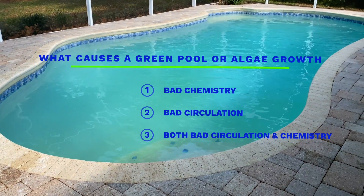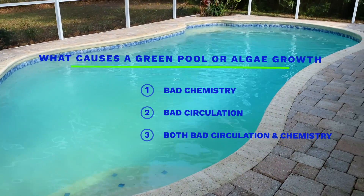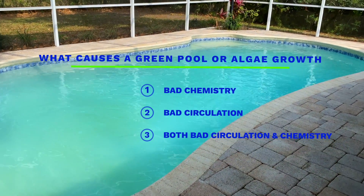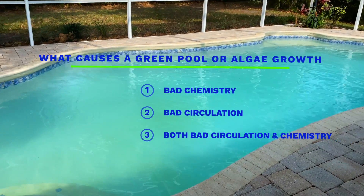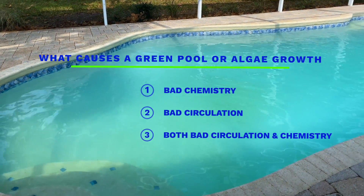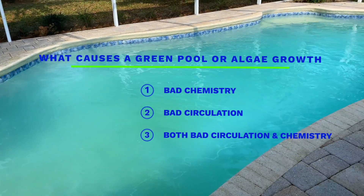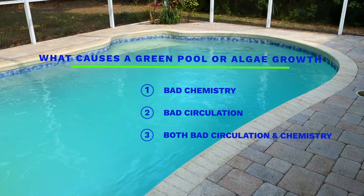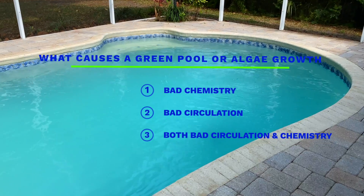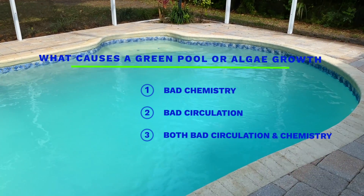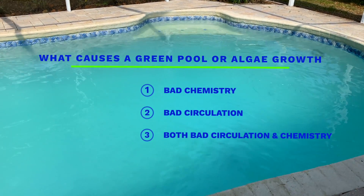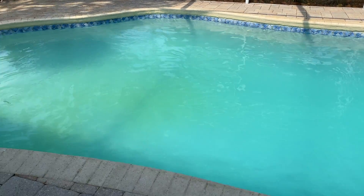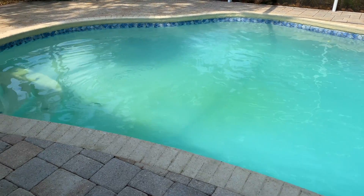The first factor is bad chemistry — if your chemistry is off, algae is going to grow. The second factor is bad circulation — if you're not keeping your pool circulating, algae will for sure grow. And the last factor is a combination of the two: bad circulation and bad chemistry. So let's talk about each of them a little more specifically.